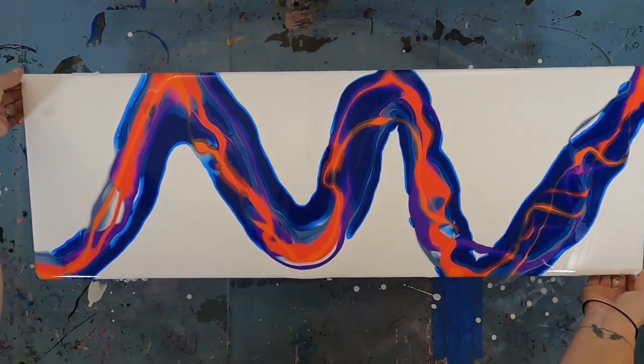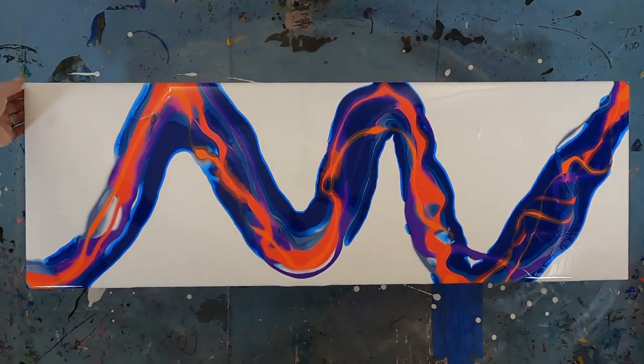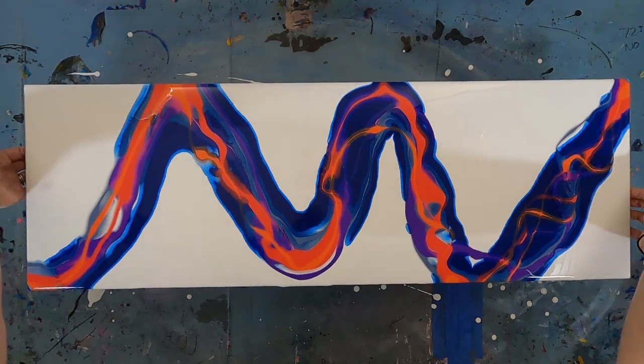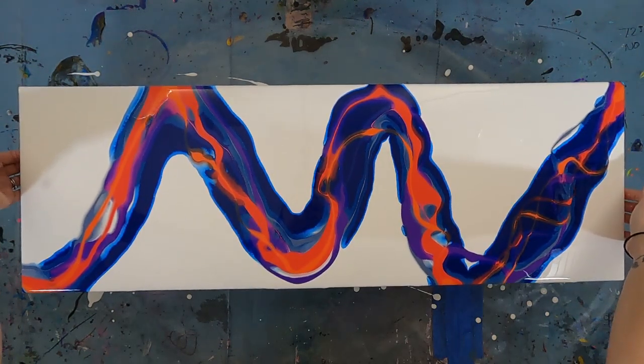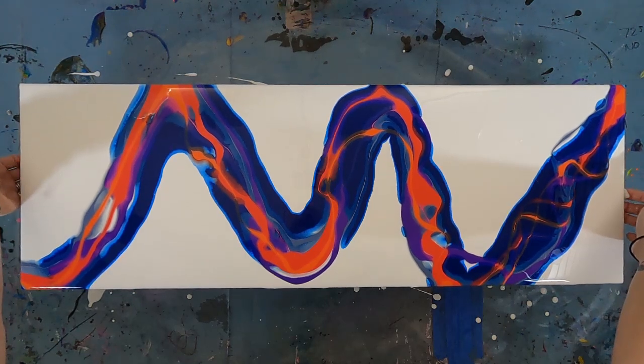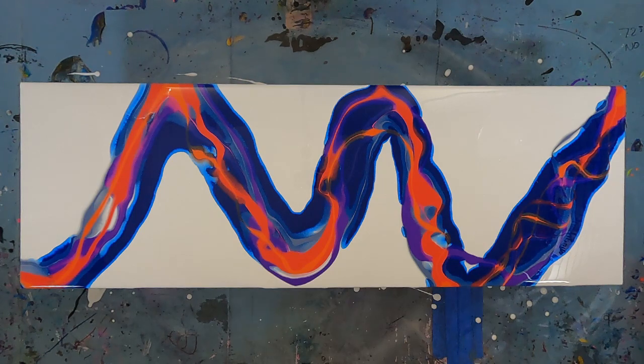I did things slightly different this time while mixing in my mica powders. Typically, I'll mix them with a bit of extra pouring medium to make sure they don't clump up when added to the complete mix. If you add the powder into a huge mix of pouring medium and paint, you're most likely going to run into clumps.